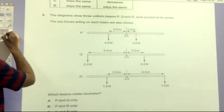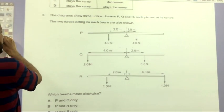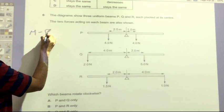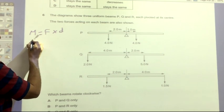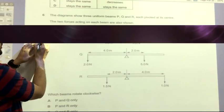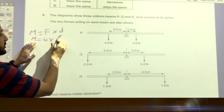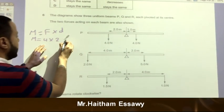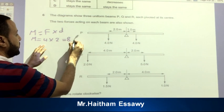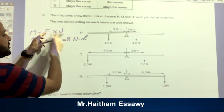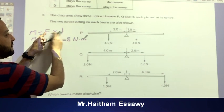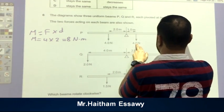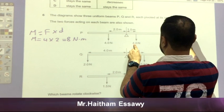So if we want to solve that first question, or the first moment of force, M equals F times D. So M equals force here equal what? Equal 4 times 2, distance from this force to the pivot, equal 8 Newton dot meter.